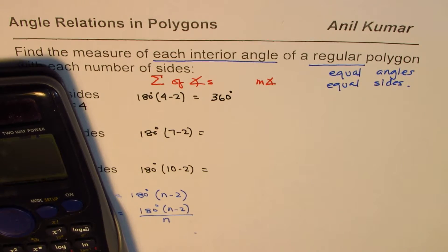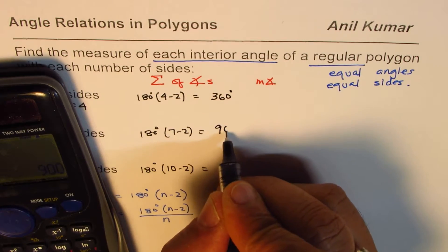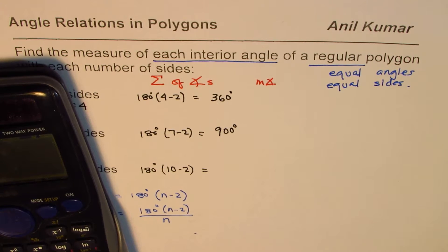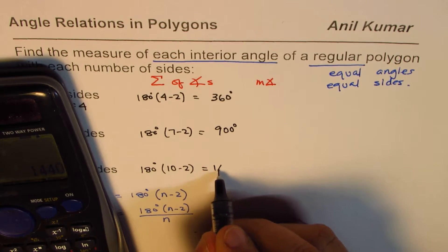The second one is 180 times 5, 7 minus 2 is 5, that gives you 900 degrees. And the last one is 180, 10 minus 2 equals to 1440.